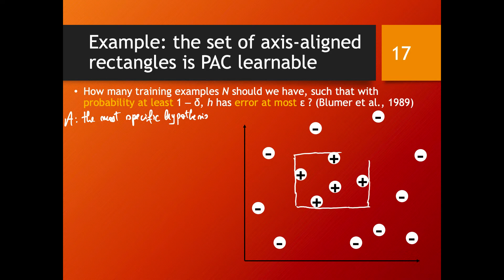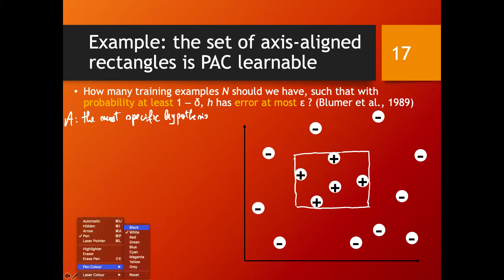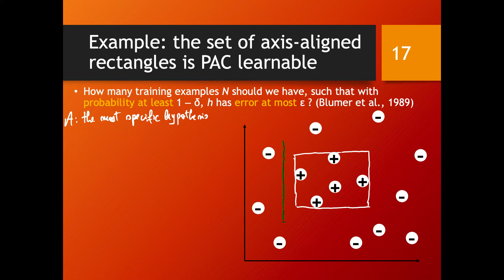We don't know if this is the real class these examples are coming from, but we know the real class is going to be only larger than this. It cannot be smaller because we already include all the positive examples, and any smaller class would miss some of them. The real class could be something larger — maybe something like this. By choosing the most specific hypothesis, the only errors we make will be on data points sampled from the gap region, because our model labels them as negative whereas they are actually positive.